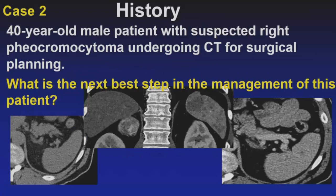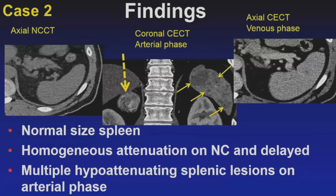Moving on to our second case — a 40-year-old male with a suspected right pheochromocytoma, based on a mass found on ultrasound and biochemical evidence. The surgeon wanted a CT scan for surgical planning. Our spleen is not enlarged. On both the non-contrast and venous phase images, there's almost homogeneous enhancement of the entire spleen. It's really on the arterial phase that you see numerous low-attenuation lesions throughout the spleen. Those with eagle eyes may also see an enhancing vascular mass of the right adrenal — the pheochromocytoma.